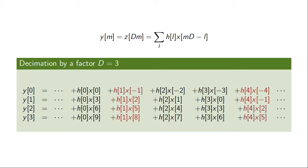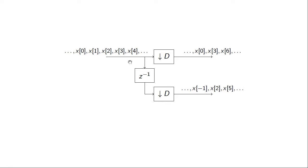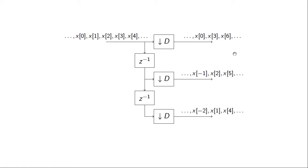We can create this system in a structured form. If we downsample signal X of n by a factor of 3, we would get X of 0, X of 3, and X of 6. If we time shift that same sequence and then downsample it, we obtain samples X of minus 1, X of 2, X of 5, and so on. Here we have three decimated versions of X of n, and due to the time shifts, they contain different samples. Together, all of these contain the complete set of samples from the original sequence X of n.